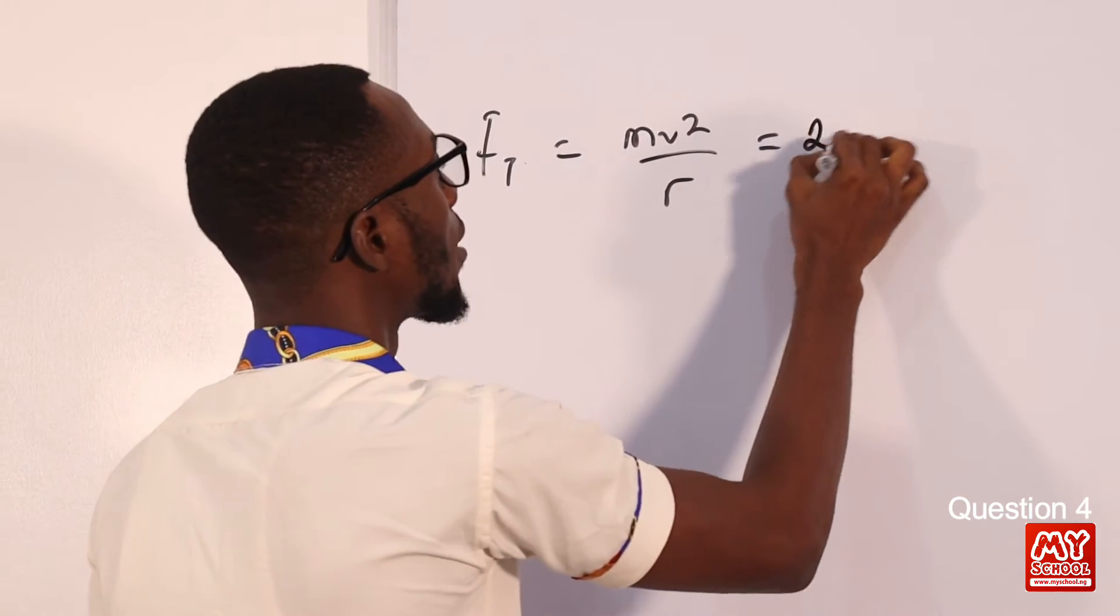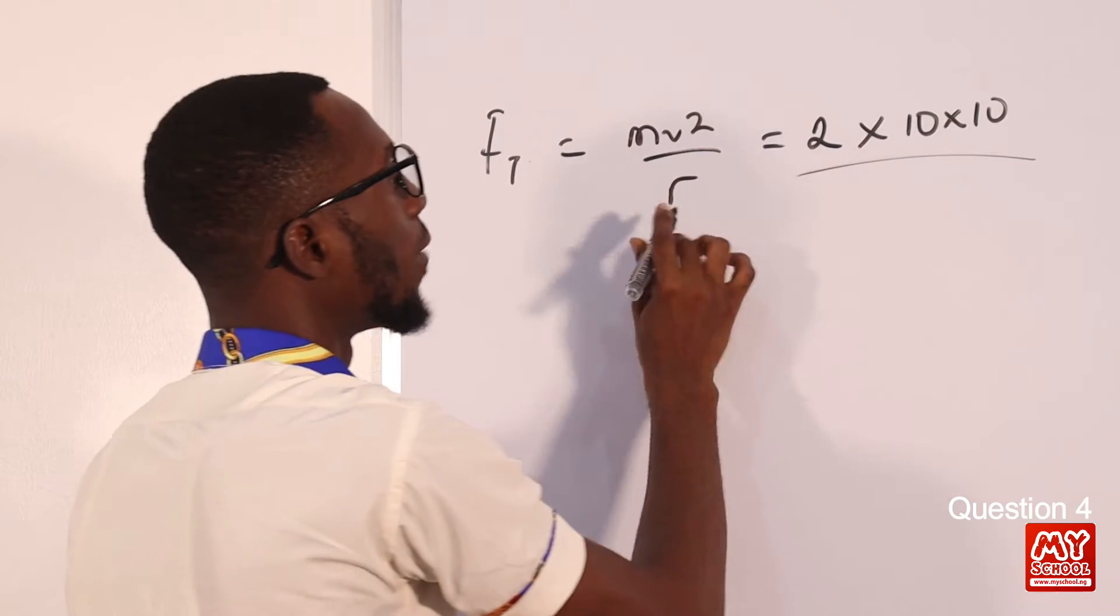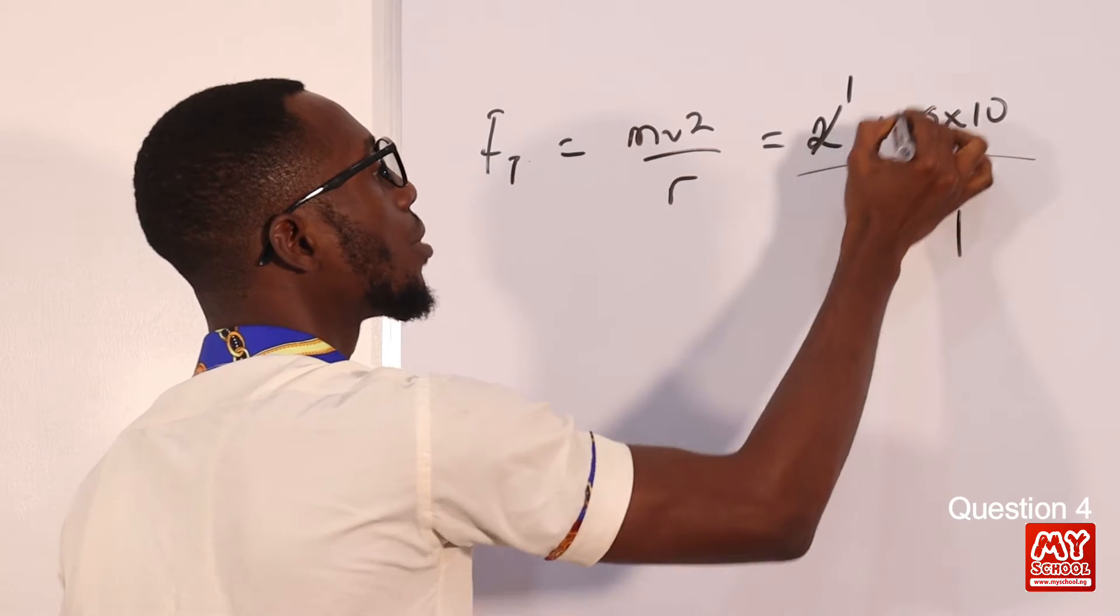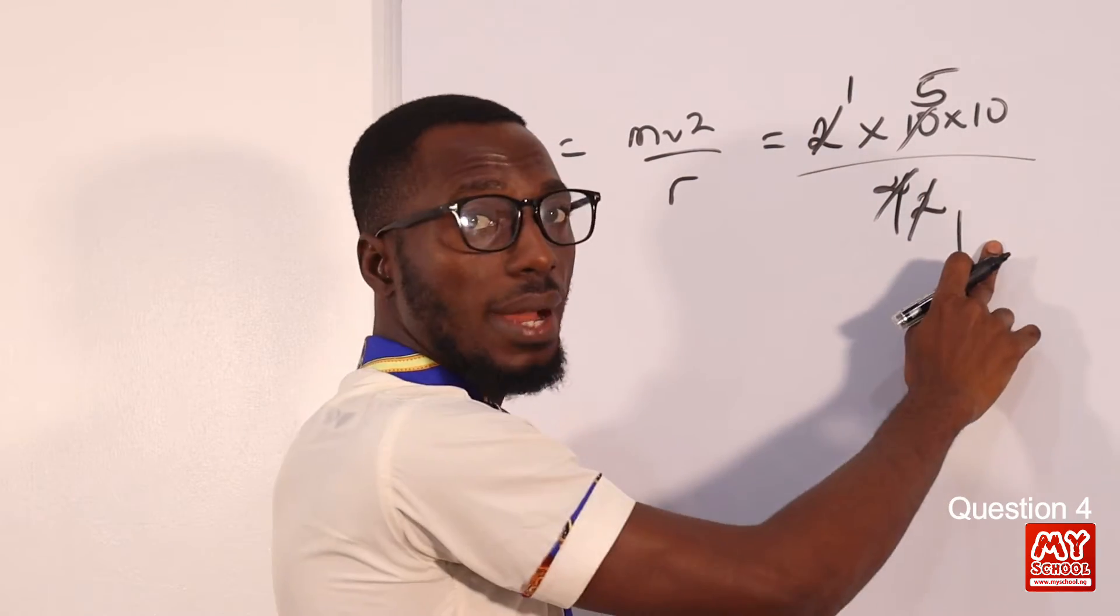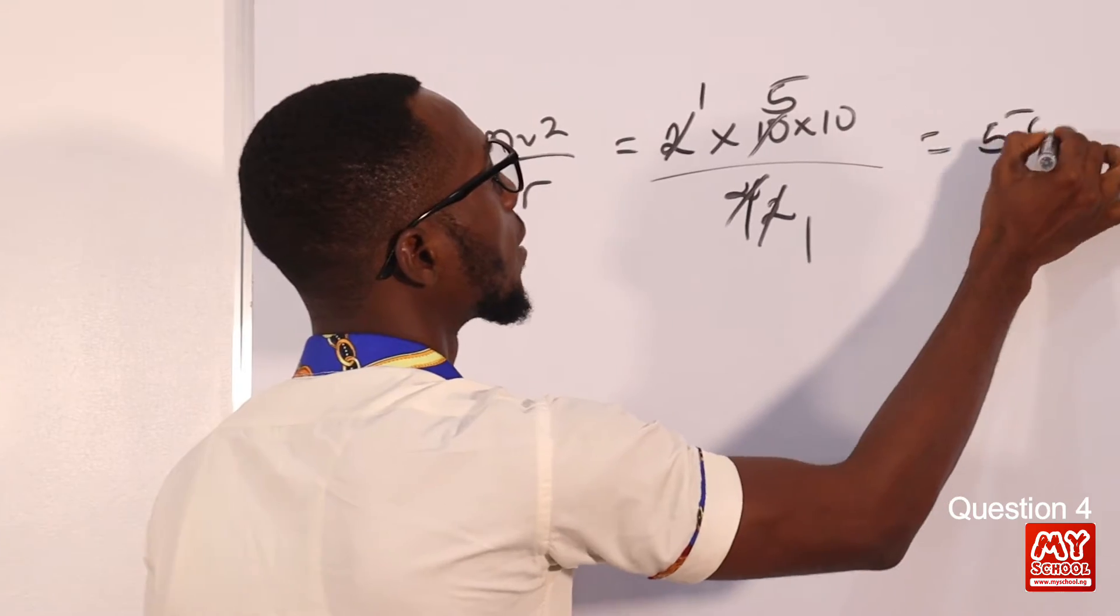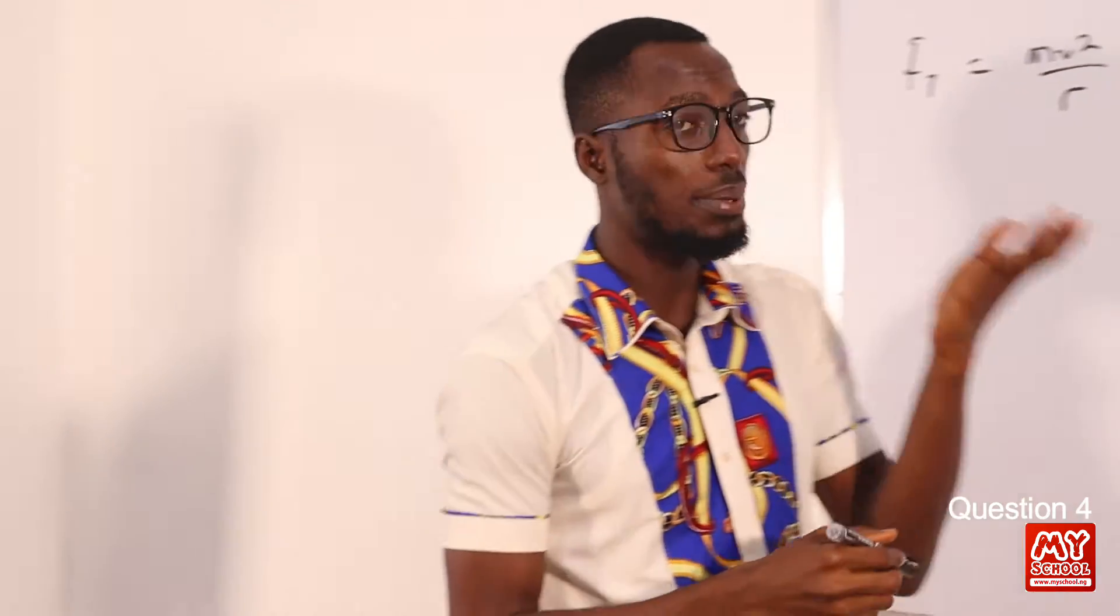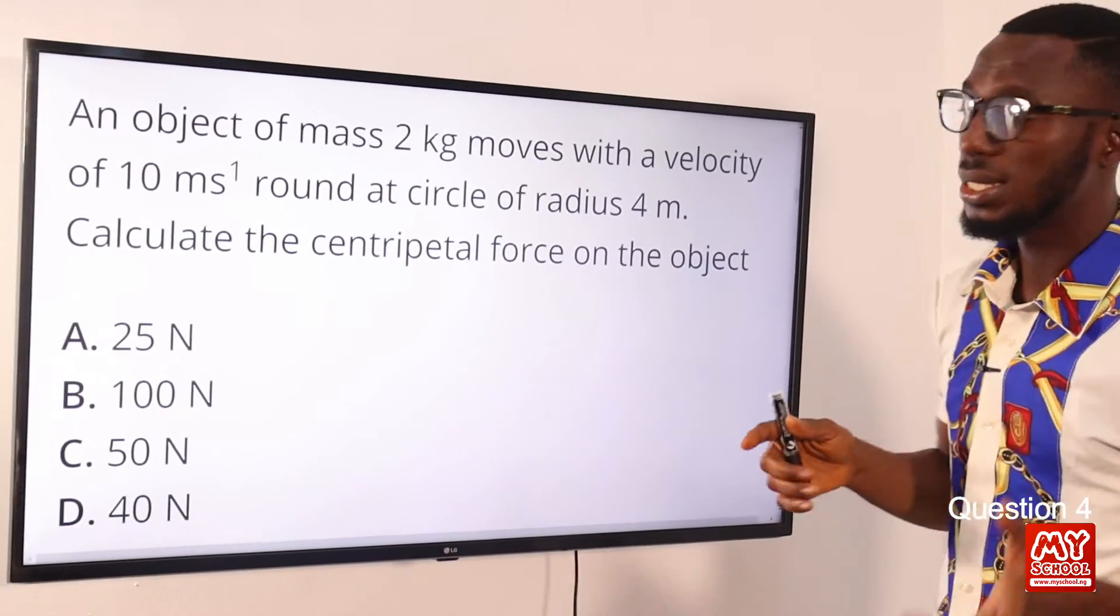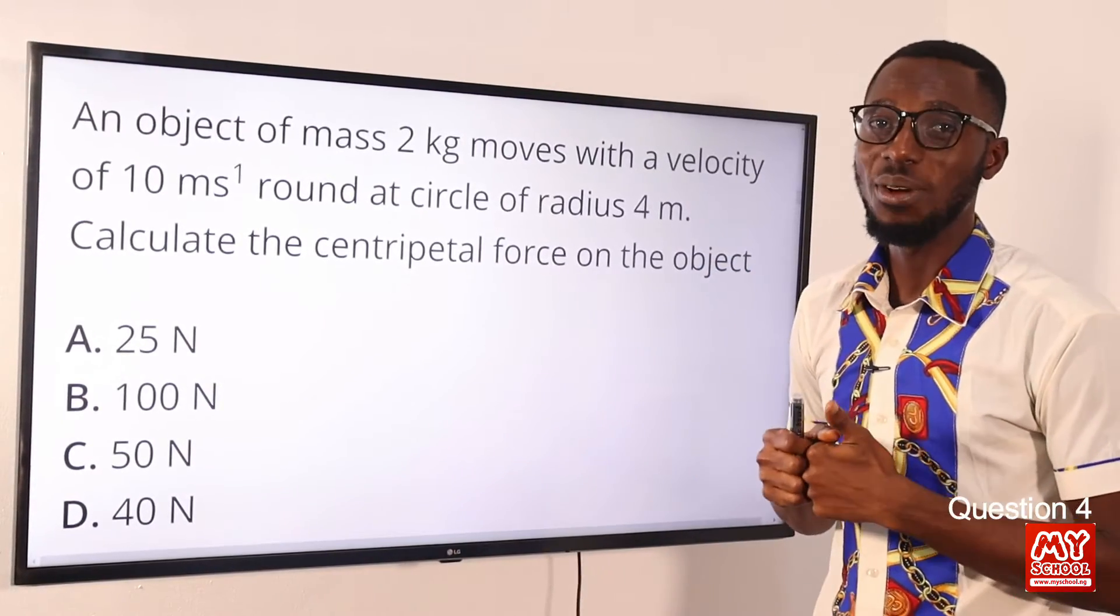The m we are given as 2, the velocity 10, that is 10 squared, 10 times 10 over the radius 4. 2 here 1, 2 here 2, 2 here 1, 2 here 5. 5 times 10, 50 times 1, 50 divided by 1, we still have 50. So let's see if we have 50 given to us, 50 Newtons to be precise. Centripetal force is measured with the unit Newton. So we can find that in option C. So option C is the correct option.